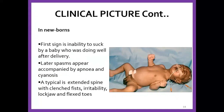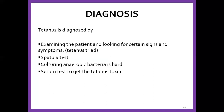In newborns, we expect to see the same things, but they will also have inability to suck because the muscles enabling sucking require contraction and relaxation. They later appear apneic and cyanosed because of the breathing muscles being affected. Because of the contraction, they will appear to have clenched fists, lock jaw, and flexed toes. If you go to the newborn unit, you might see some of these cases of neonatal tetanus.